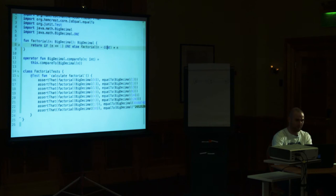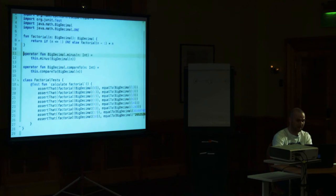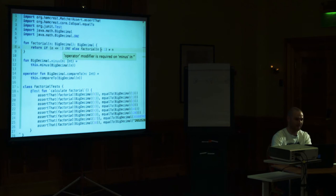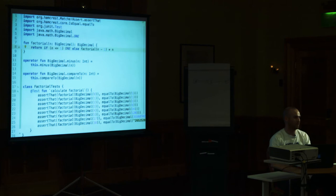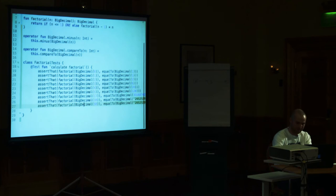It was a bit frustrating having to change the literal to a constant. In theory — and actually in practice — we can write an extension function. I define `operator fun BigDecimal.compareTo(int: Int)` that returns `this.compareTo(BigDecimal(int))`, converted to expression function. It just works as if it were a built-in thing. We can do the same with `minus`. The key thing is the `operator` keyword — there is operator overloading in Kotlin. If you remove `operator`, Kotlin complains that you need it. We can also use the keyword `infix`, allowing the syntax `n minus 1` without dot and parentheses — another syntactic sugar.